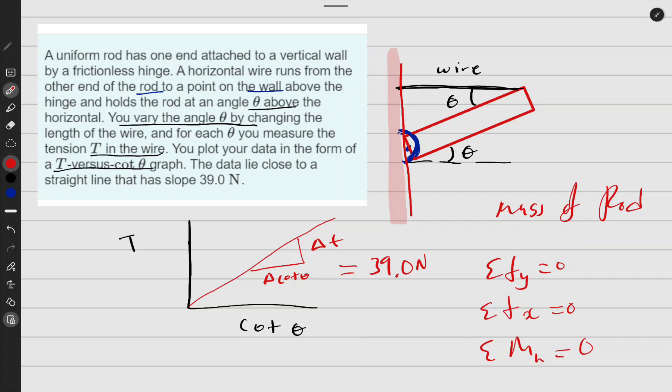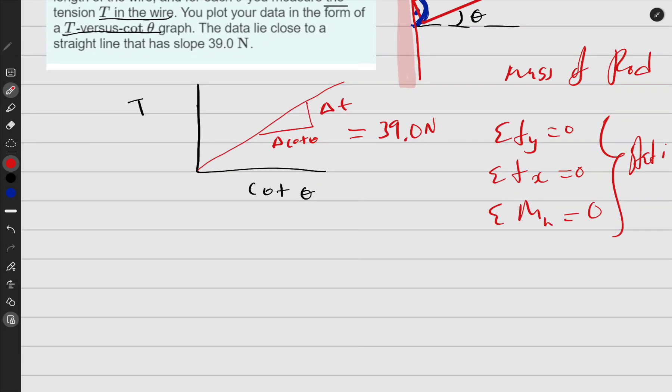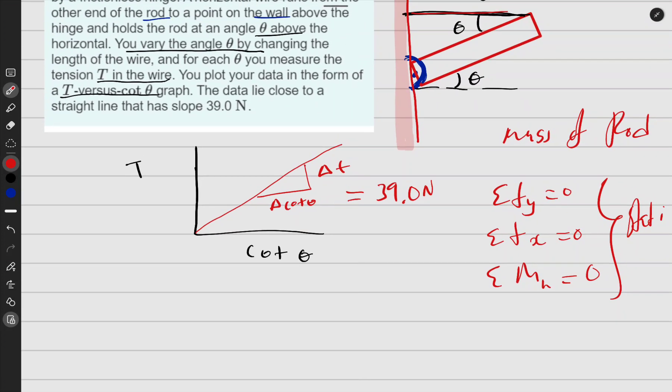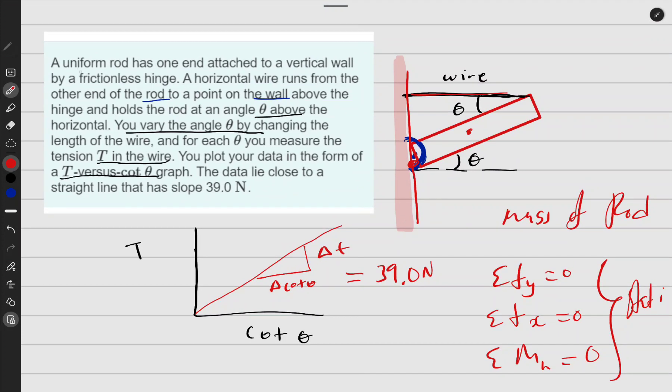Sum of the moments about any point—let me just say the hinge—should be zero, and then we can call it static. So as I attach this system, we expect this thing to be static, right? So you can do sum of forces along x and sum of the moments about any point.